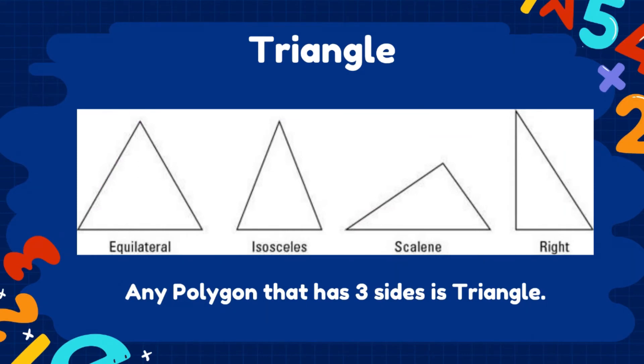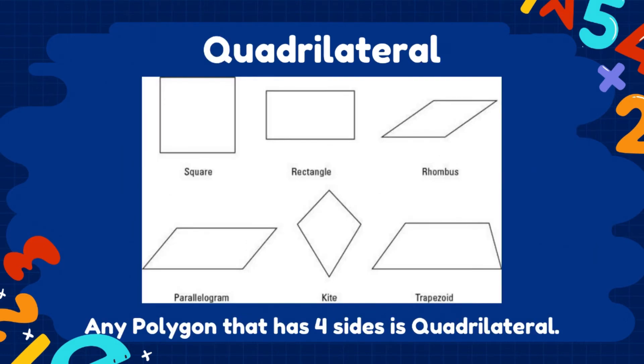Let us discuss more about the triangle and quadrilateral. A polygon that has 3 sides is what we call as triangle, and this triangle can be regular or irregular. We call the triangle as equilateral triangle, isosceles, scalene, and right triangle.